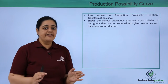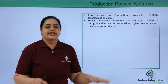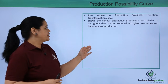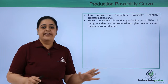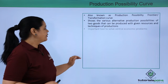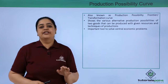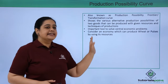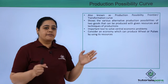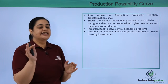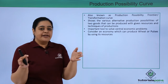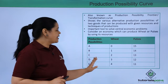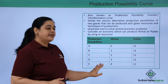This is based on the given resources and techniques of production available. For example, if I have a tractor and land, I can use the PPC to understand what alternative production possibilities of two goods are available on that piece of land. It is considered a very important tool to solve the central economic problems. It considers an economy that can produce wheat or pulses using its resources.